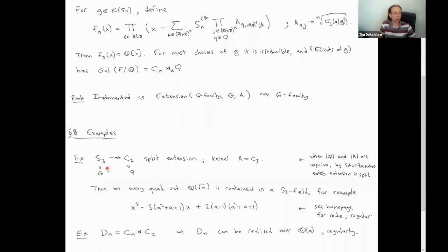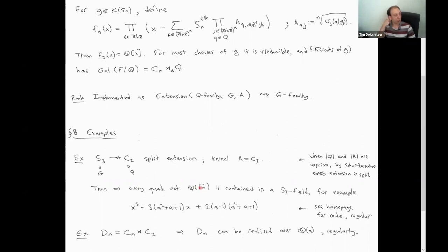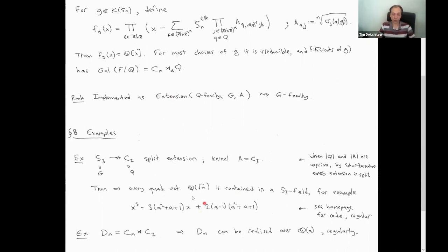And if you use this 'extension' function and see what comes out, you say: let's look at the obvious family of C2 extensions, Q adjoin root A — a family given by x² − A — and ask for an extension of this family to S3 over C3. What comes out is a family of S3 extensions such that the discriminant of this polynomial up to squares is exactly A. So you can use it to construct an S3 extension with any given quadratic field inside. And it's automatically regular from these properties.